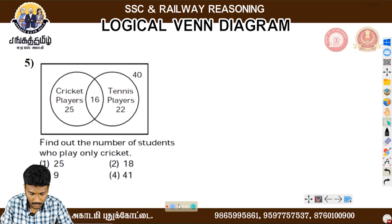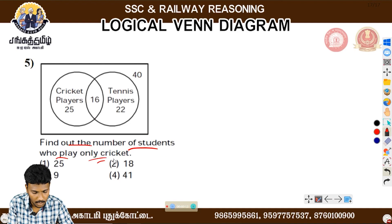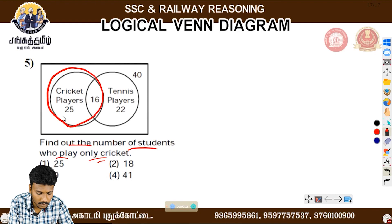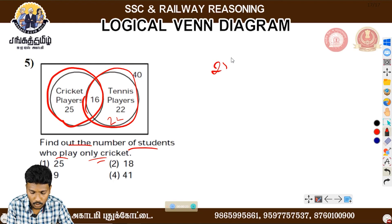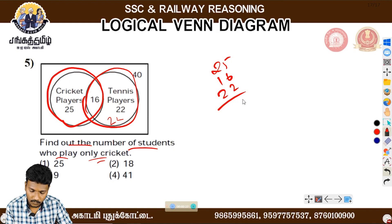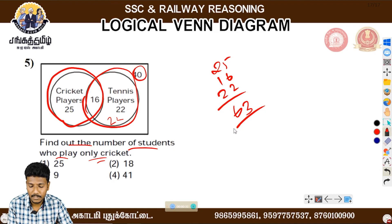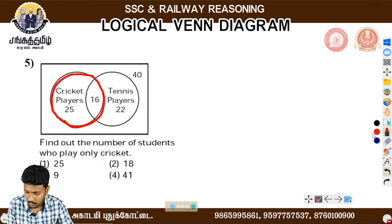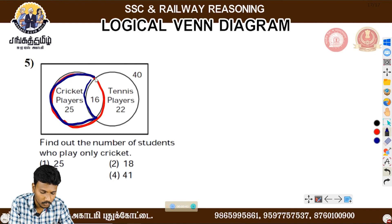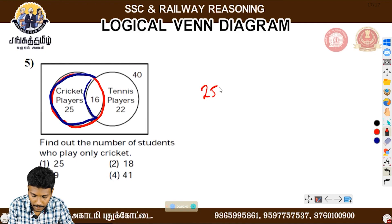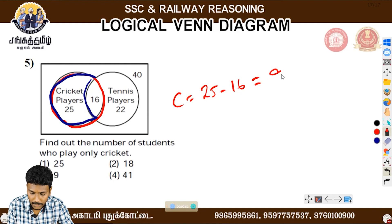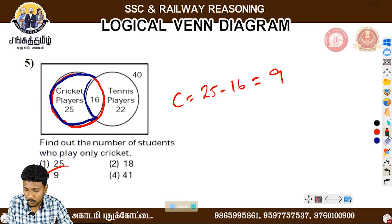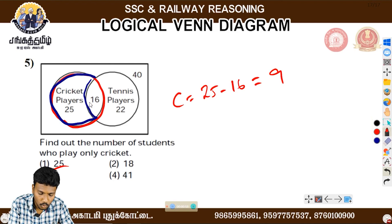Now let's go to the fifth sum. Find out the number of students who play only cricket. The total number of students is 20 and 22. Let's see: 25 plus 16 plus 22 gives 47, 53, 63. The total is not the same. So where does 63 come from? If the total number of students is 25, you switch out 20 and 5. So 25 minus 16 gives the number of only-cricket players. The answer is 9.